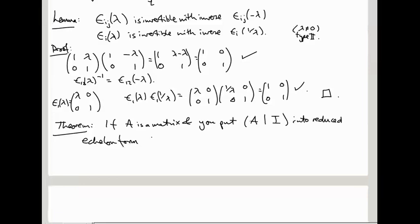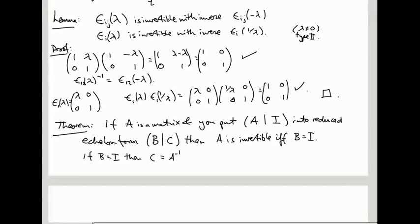And you get, let's say, B, C. Then A is invertible if and only if B is the identity, and if B is the identity, then C is A inverse. So you do these row operations, you convert this augmented matrix into something where B is in reduced echelon form. If B is the identity, then C is A inverse.